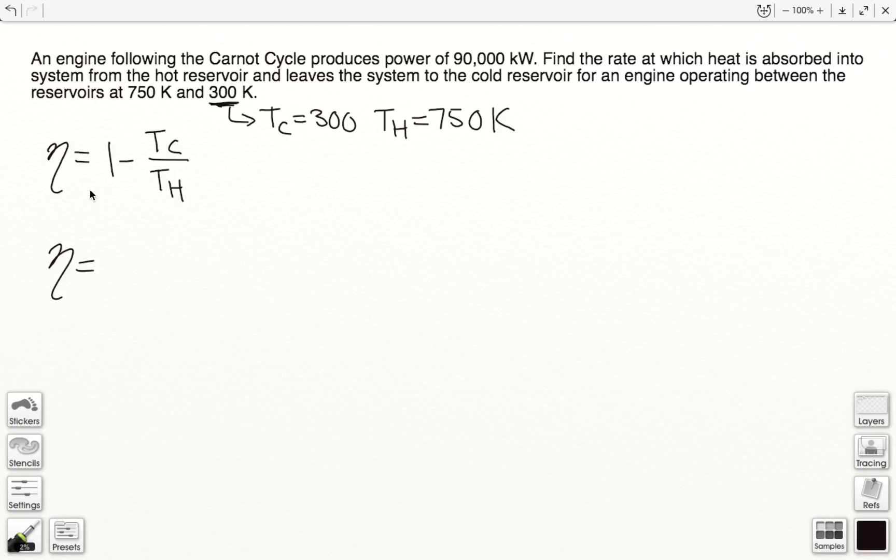Now, where this came from was net work done by gas over our Q_in. Our Q_in is the heat that is absorbed into the system from the hot reservoir. That is what we've been calling our Q_in.